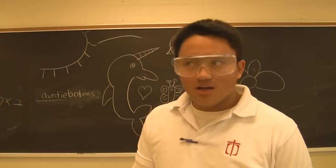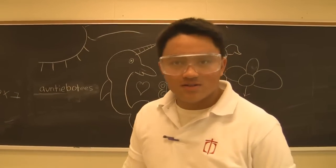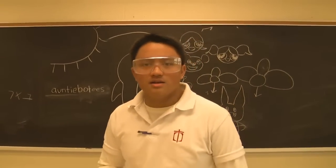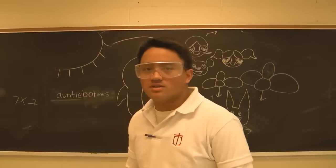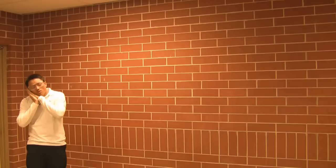I'll just show you a reenactment of how the antibodies find viruses and germs. These germs — as you can see, this is Fervin as the body, and Jonathan is the antibody, and Jay is the bacteria.